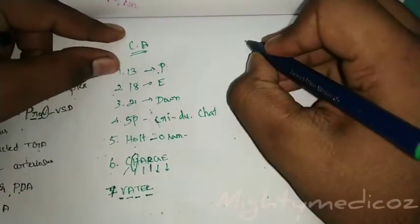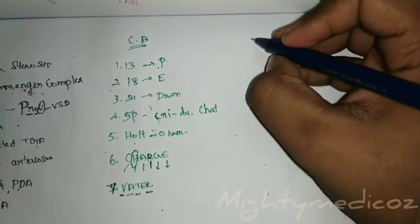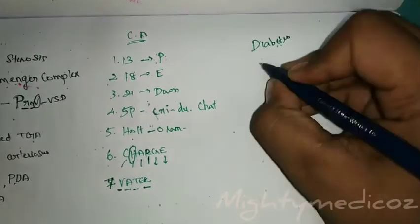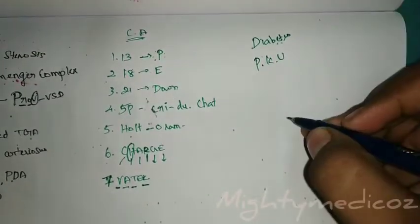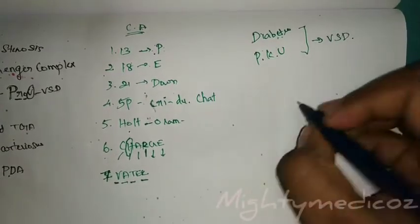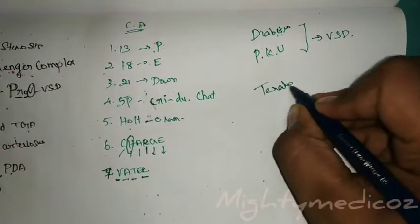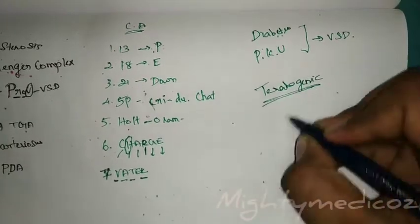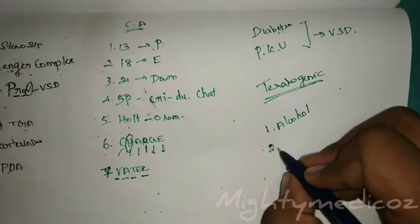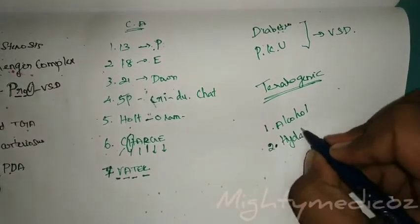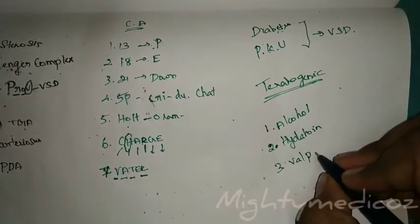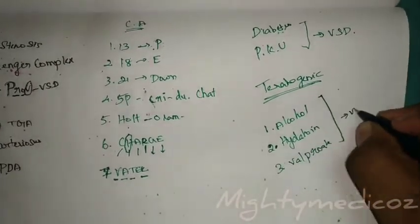Maternal factors which may lead to congenital heart disease: diabetes in the mother and phenylketonuria in the mother will lead to congenital heart disease and particularly lead to VSD. Teratogenic agents that may result in VSD include alcohol — which causes fetal alcohol syndrome — drugs such as hydantoin — which causes fetal hydantoin syndrome — and valproate, which may also result in VSD.